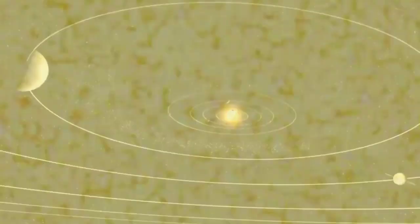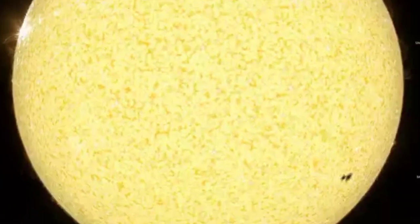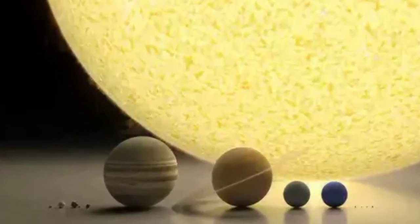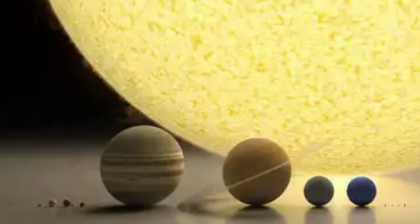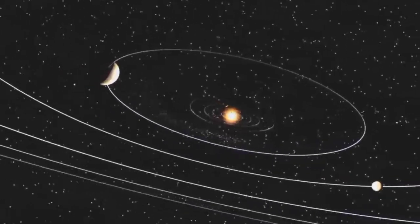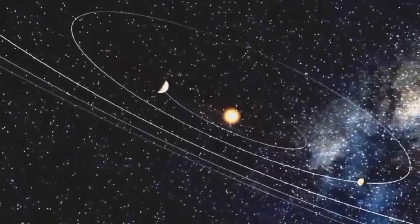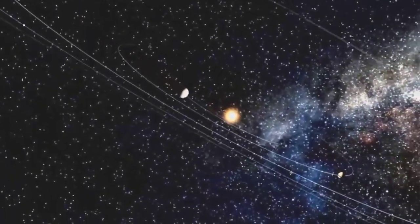It is so huge that it contains 99.8% of the solar system's mass. Still, the sun is very, very far away from the earth. That's why it looks so small from the earth.